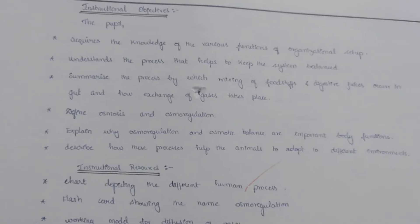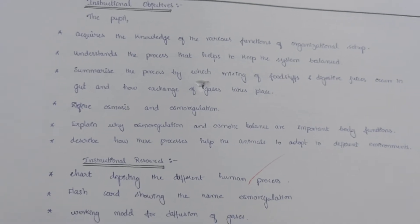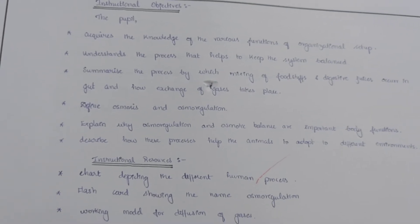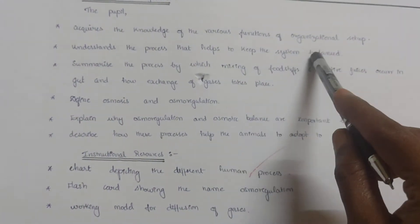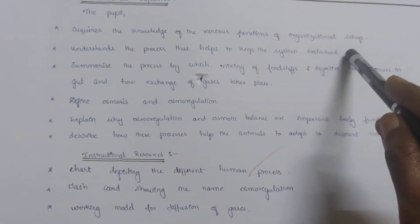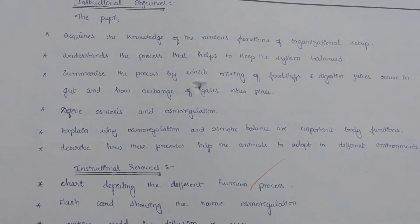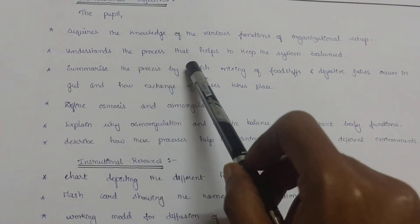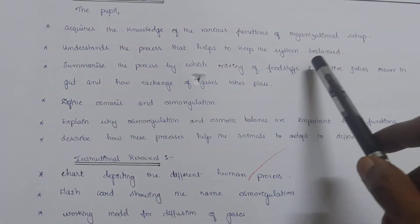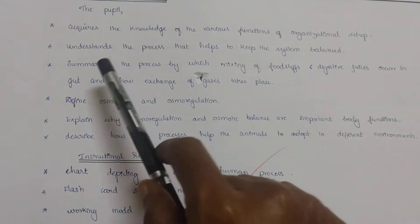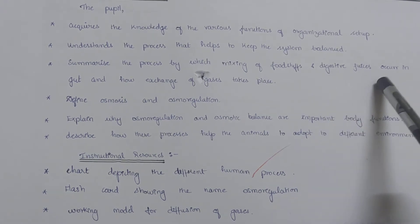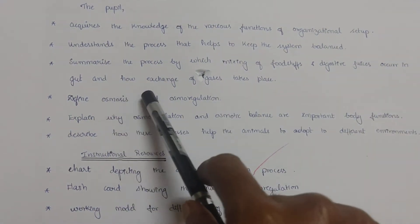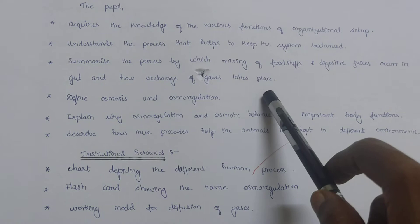Instructional objectives. The pupil acquires the knowledge of the various functions of organizational setup, understands the process that helps to keep the system balanced, summarizes the process by which mixing of foodstuffs and digestive juices occur in gut and how exchange of gases takes place.